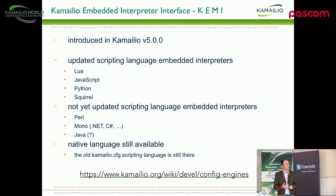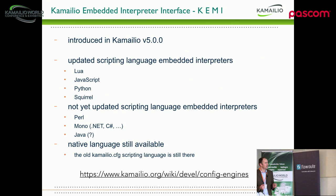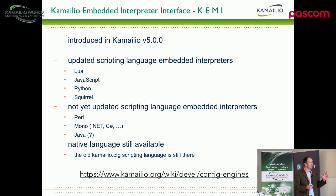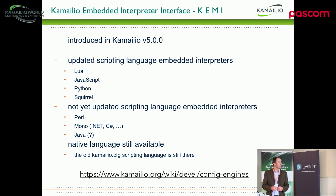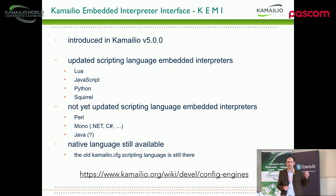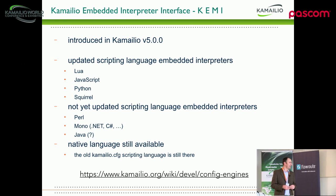KEMI was added to Kamailio, and the first version had the default config file with present services working with this interpreter. What this allows is a single framework for exporting a function and making it available in any of these scripting languages. We already had the Lua interpreter — Hugh worked a lot on that module in the past. We had Python, I think Maxim contributed; Perl, I don't remember who contributed, but we keep it here. Then I did Mono, then someone contributed Java.